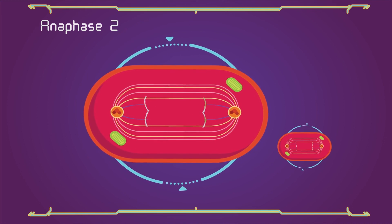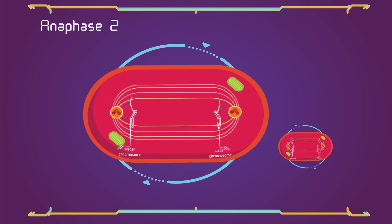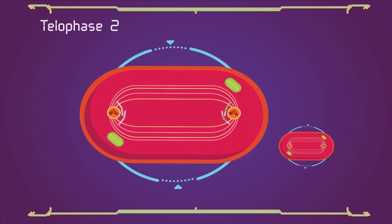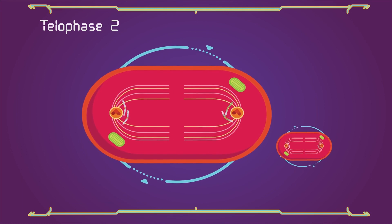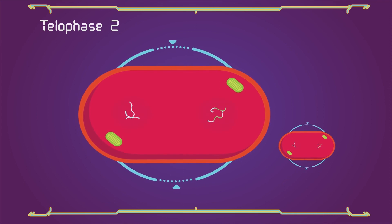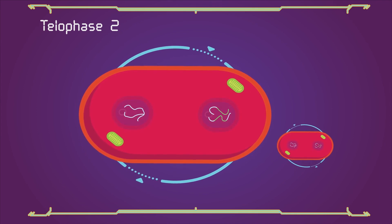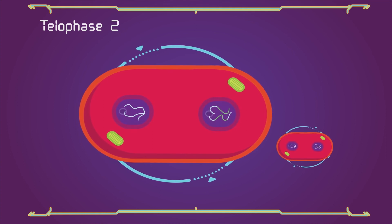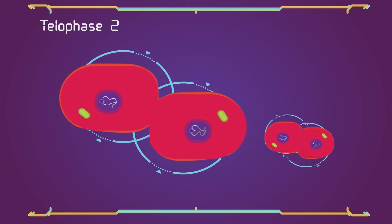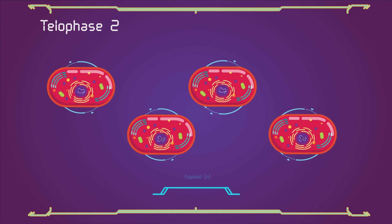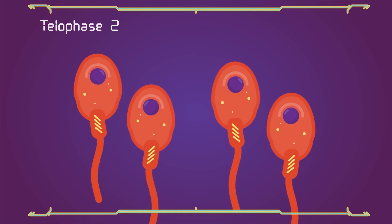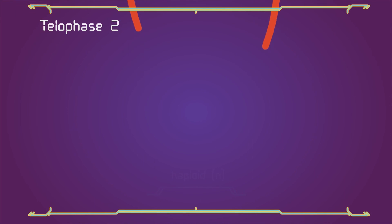The process ends with telophase 2, which is similar to telophase 1 and is marked by the disassembly of the spindle and decondensation and lengthening of the chromosomes. Nuclear envelopes reform and cleavage or cell plate formation eventually produces a total of four daughter cells, each with a haploid set of chromosomes. Meiosis is now complete and ends up with four new daughter cells.